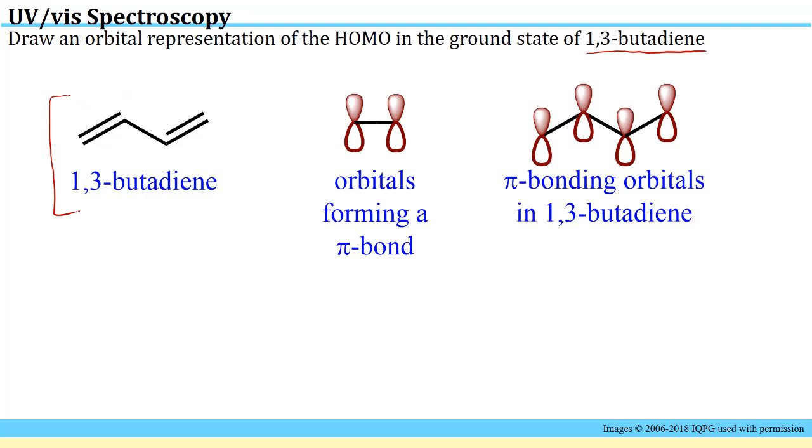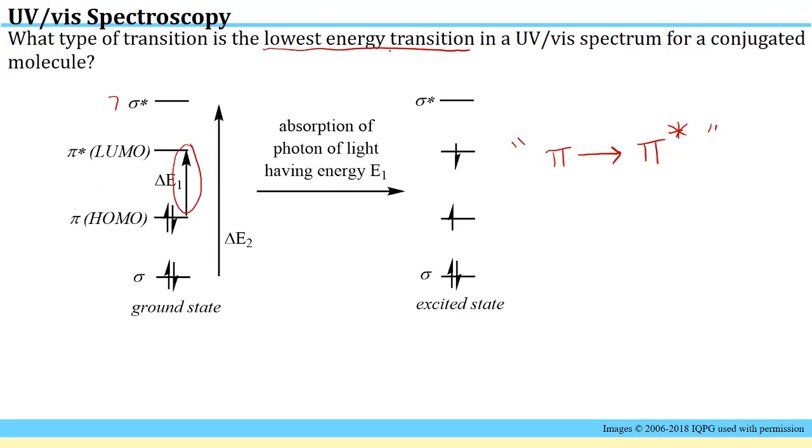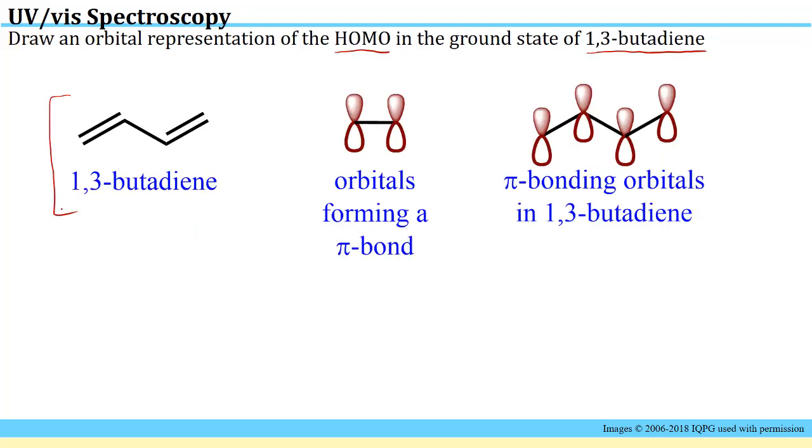You need to know what orbitals are used to make the pi bonds, because the HOMO in a pi conjugated molecule is going to be the pi bonding orbital. Pi bonds are made when you have an overlap between two adjacent p orbitals. If I was to draw those in on butadiene for each of the two pi bonds in the structure like this, I would be representing all the electrons in that pi conjugated system in their orbitals, and that's what I show over here.